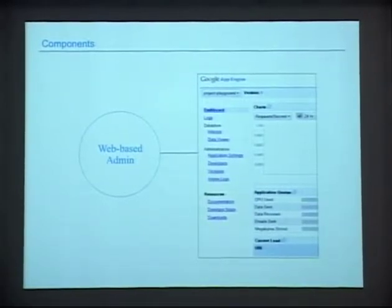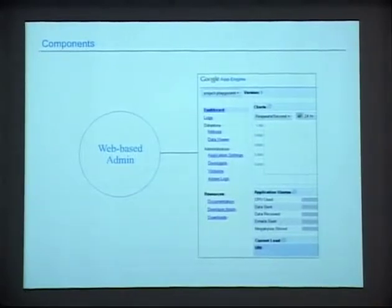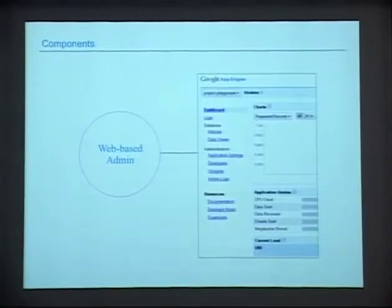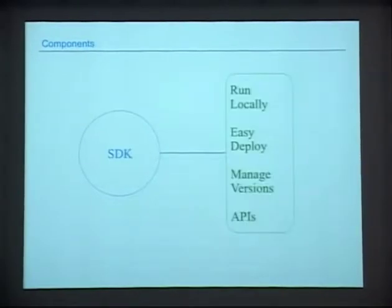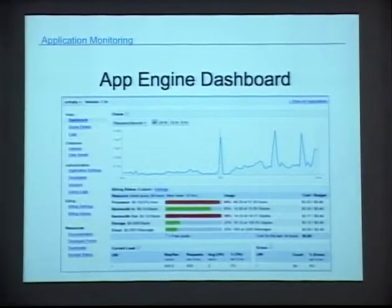For the web-based administration console: since your application is running on the same machines as everybody else's, you run in a sandbox — a restricted, more secure environment. You don't have full control, no shell access. So we create this control panel to give you things you'd build yourself. It shows you network traffic, how many users, how much free quota you're using, whether you've gone over quota, how much money you've budgeted, and what it costs you today — a daily number that resets.